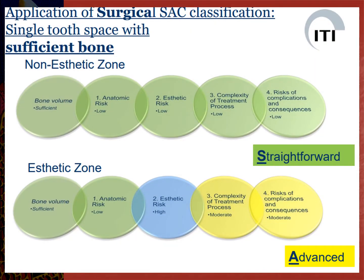For example, in the application of surgical SAC classification for a single tooth space with sufficient bone, two conditions are considered: non-esthetic zone and aesthetic zone. Five clinical parameters are assessed — bone volume, anatomic risk, aesthetic risk, complexity of the treatment process, and risk of complications and consequences. Based on these parameters, the non-esthetic zone is categorized as straightforward treatment, whereas the aesthetic zone falls under the advanced SAC classification. There are different clinical scenarios such as short edentulous, extended edentulous, and full arch mandible, and each is categorized into straightforward, advanced, or complex.